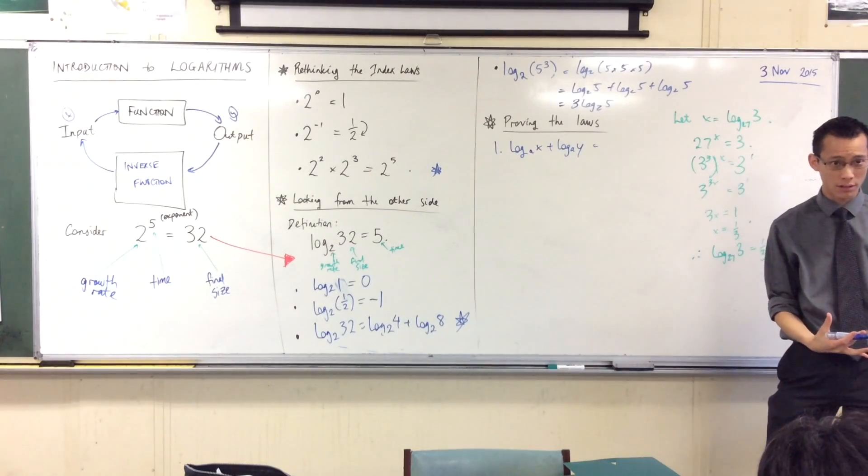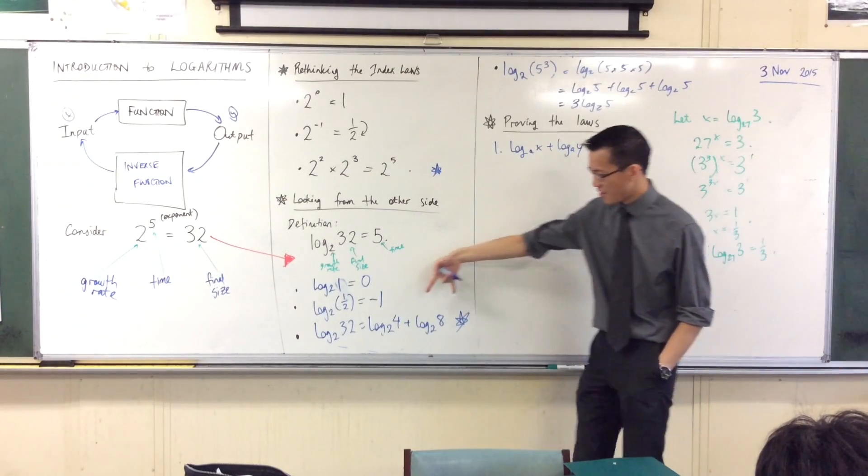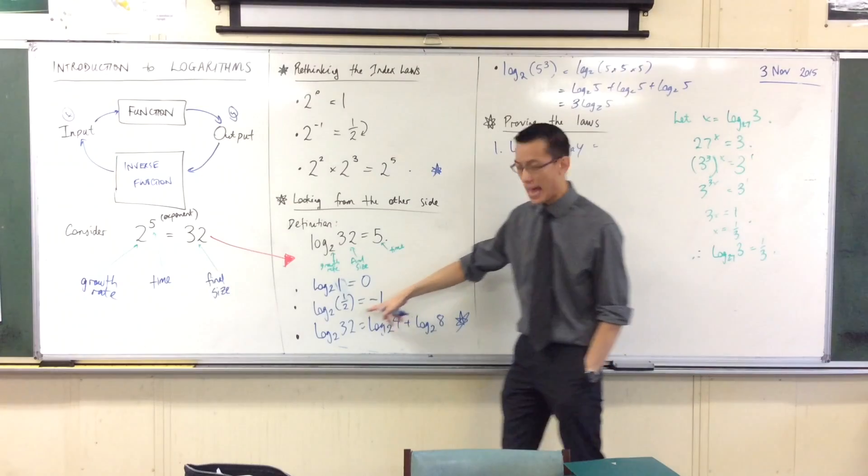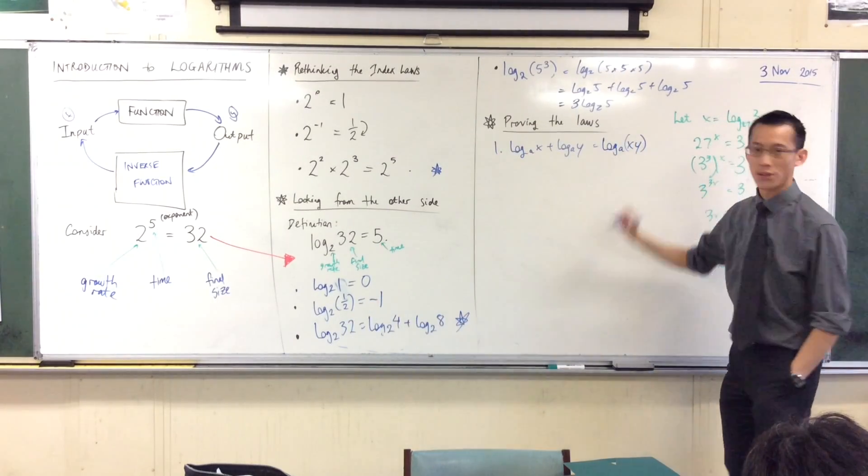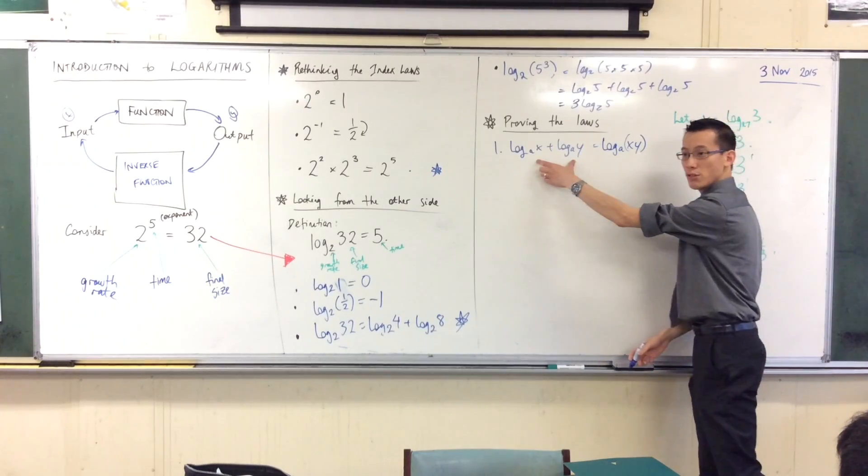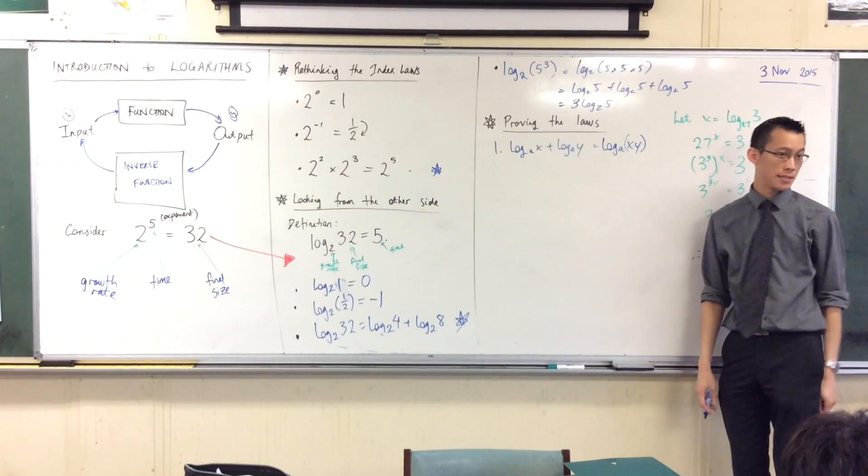If I'm adding two logs, what I'm suggesting is you take these two numbers, the four and the eight, and you multiply them. So this is what I want to prove. Can you see that? If I add these two logs, I'm going to multiply these two numbers together.